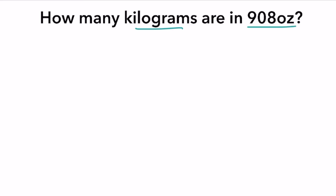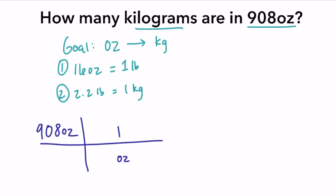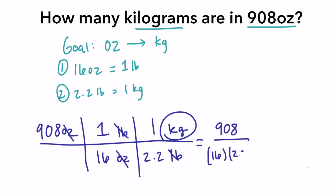How many kilograms are in 908 ounces? Our goal is to convert ounces to kilograms using two conversion factors. The first is 16 ounces equals one pound; the second is 2.2 pounds equals one kilogram. Starting with 908 ounces, we use the first conversion factor with ounces on the bottom and pounds on top — 16 ounces to one pound. Our ounces cancel. Then we multiply by the second conversion factor with pounds on the bottom and kilograms on top — 2.2 pounds to one kilogram. Our pounds cancel, leaving kilograms. We simplify: 908 divided by 16, divided by 2.2, giving 25.79 kilograms.